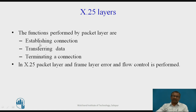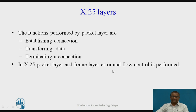Let us see the functions performed by the packet layer. The first function is establishing a connection. Then, transferring data. Then, terminating a connection. These are the three stages involved in the packet layer. In addition, in X.25, both the packet layer and frame layer perform error and flow control. So in addition to data transfer, circuit establishment, and circuit disconnection, the packet layer also performs error and flow control.